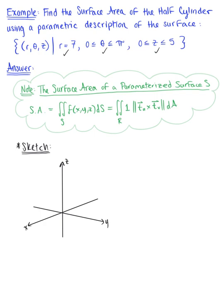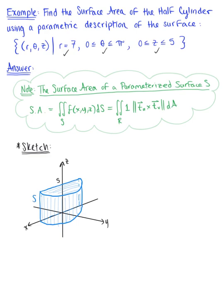Let's try our best to sketch this cylinder. I always like to start with a full circle on the top, and then remind ourselves that we're only thinking about half of this cylinder, so we want to cut that back half off. Here is our cylinder. We know it's bounded above by the plane z = 5, and below by the xy-plane where z = 0, and we're looking for the surface area of this. So, bounded above by 5, below by z = 0, and we have a radius of 7.